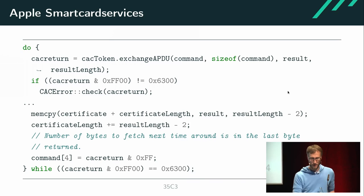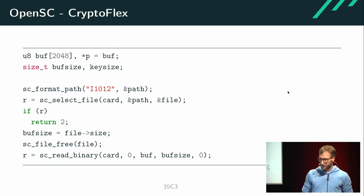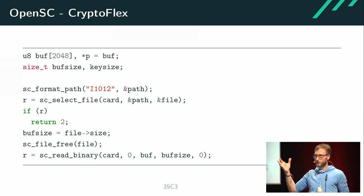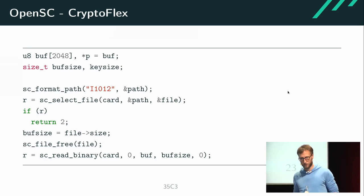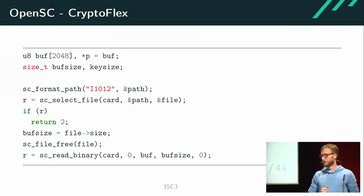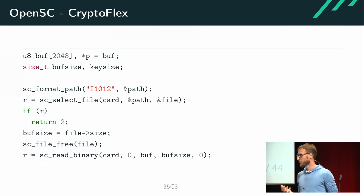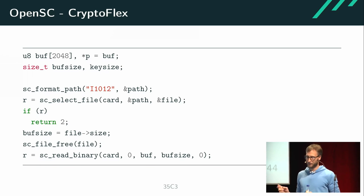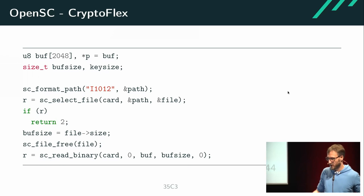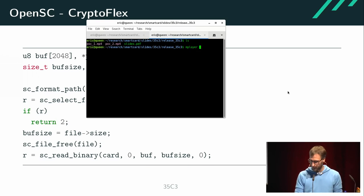Another interesting issue in the OpenSC stack is in the CryptoFlex tool. It has a fixed-size buffer of 2048 bytes and uses a helper function, select_file, to get metadata about a file — including file size. When reading the binary, it uses the size the card reports rather than the size of the buffer. So if the card says the file is five kilobytes, the buffer will obviously overflow. I have a small demonstration of this.